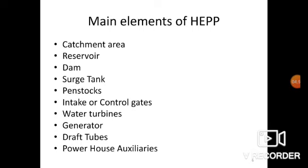Third is the dam — a dam is a barrier which stores water and creates water head. Next is the surge tank — a small tank provided to reduce the pressure surge in the conduits, located nearer to the beginning of the conduits. Next are the penstocks — open or closed conduits which carry water to the turbines, generally made of RCC or steel. Intake or control walls are gates built on the inside of the dam; water from the reservoir is released and controlled through these gates.